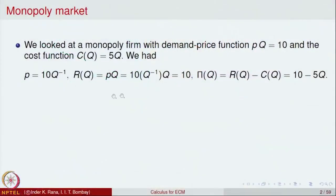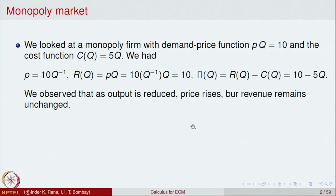Let us continue with our examples of monopoly market. We have looked at a monopoly firm with demand price function P·Q = 10 and cost function C(Q) = 5Q. From this we derived P = 10Q⁻¹, revenue function R = 10 (a constant), and profit function π = 10 − 5Q. We observed that as output is reduced the price rises, but the revenue remains unchanged.